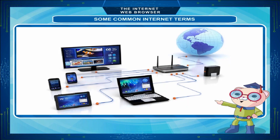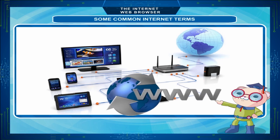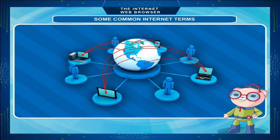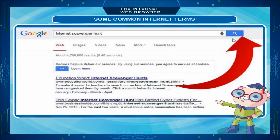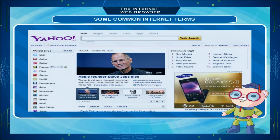Search Engine: A web search engine is a software system that is designed to search for information on the worldwide web. Web search engines have now become a part of daily life. Google search engine is the best search engine in the world and it is also one of the most popular products from Google. Other popular search engines are Bing, Yahoo, etc.